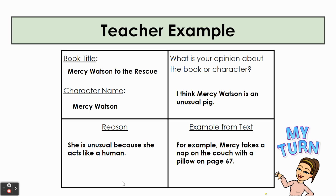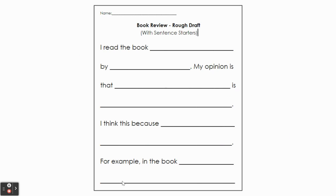So right now, I would like you to find your planning sheet for your book review and have it next to you because we will be using it today. You will also need this sheet of paper. At the top, it is titled Book Review, Rough Draft. And then I have chosen to use the one that says With Sentence Starters, so I'm using the sentence starters to help me build my complete sentences and to format my book review. This should be in your folder that you picked up at the last packet pickup. Pause this video as you find your paper and press play when you're ready to continue.